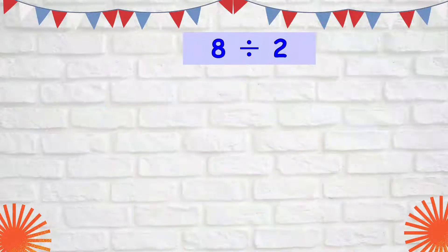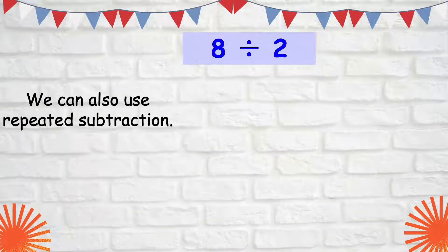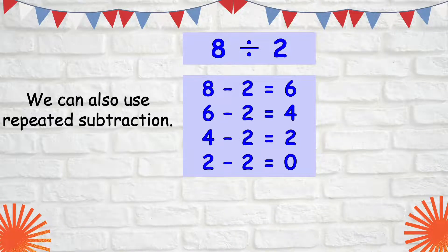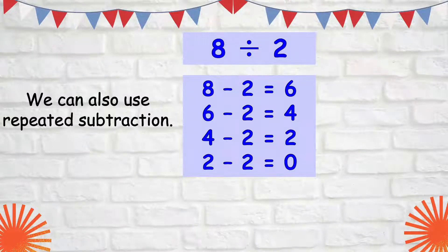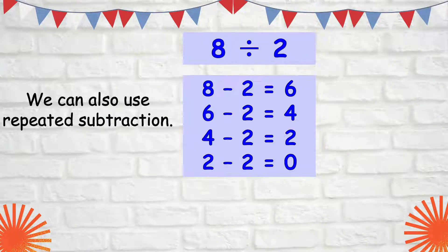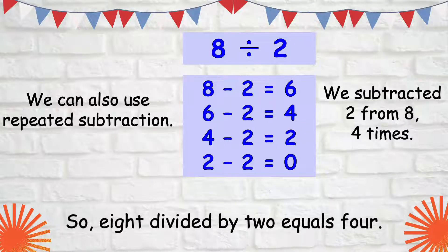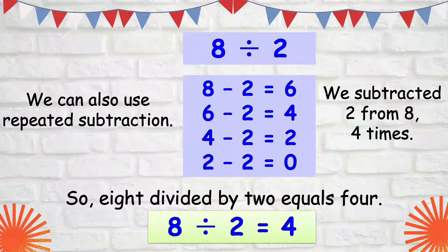We can also use repeated subtraction. 8 minus 2 equals 6. We can still subtract 2 from 6 — that is 4. Subtract 2 from 4 — that is 2. And subtract 2 from 2 — that is 0. We stop because the difference is 0. We subtracted 2 from 8 exactly 4 times, so 4 is the quotient. 8 divided by 2 equals 4.